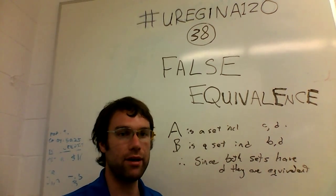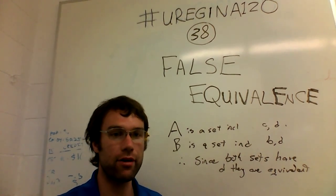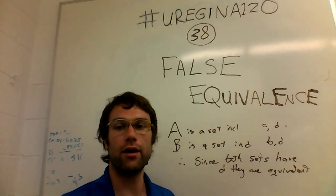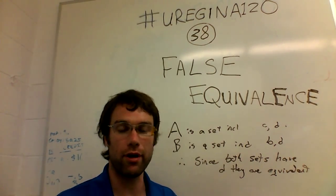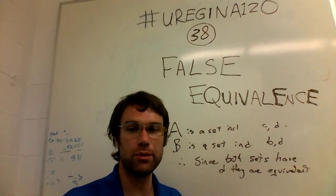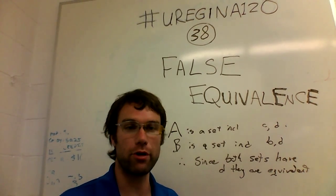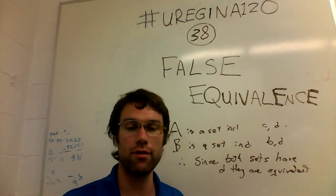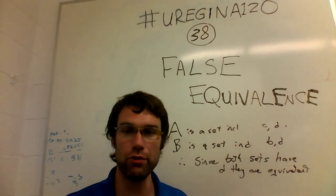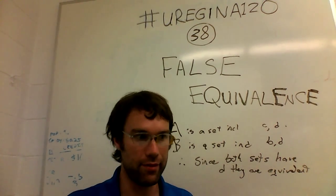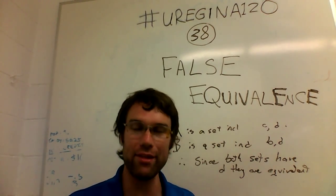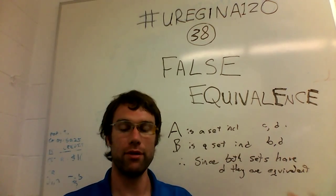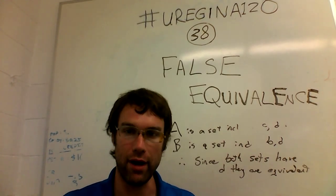In practice, false equivalence means equivocating — taking two things that are similar and trying to present them as though they are equal in some important sense. Perhaps there is a sense in which two things are the same or are related, but that relationship does not necessarily extend to what you're trying to claim or conclude. This is very similar to reasoning by analogy, and there's a danger in concluding too quickly that the analogy holds when it does not, or when there is some extra difficulty you haven't accounted for.